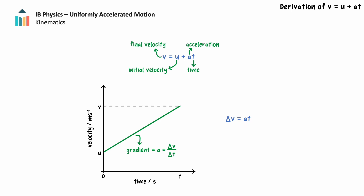We can rearrange the formula for change in velocity. From the graph, the change in velocity is equal to the final velocity, v, minus the initial velocity, u. Substituting this into the equation and rearranging gives us our first formula: v equals u plus at.